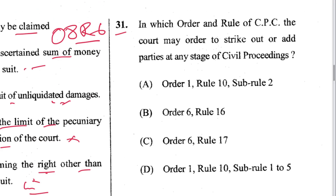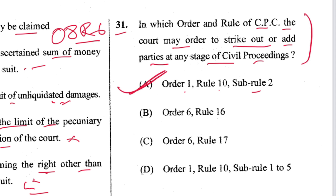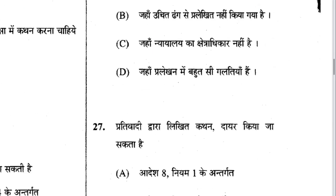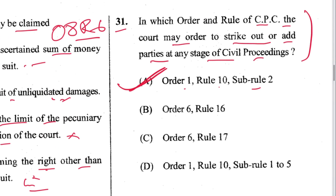Question 31: Under which Order and Rule of CPC may the court order to strike out or add parties during civil proceedings? That is Order 1 Rule 10 Sub-rule 2. Note: the same question was asked in question 25 — the same question has been asked twice in this paper.